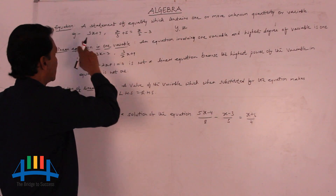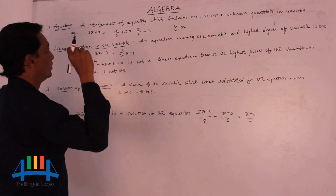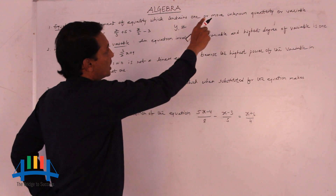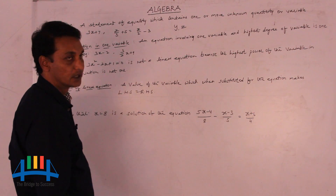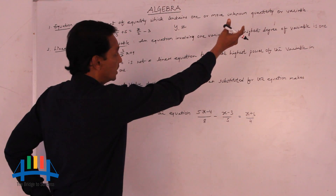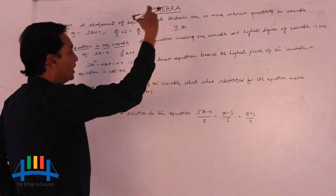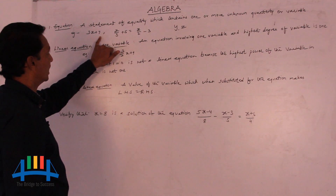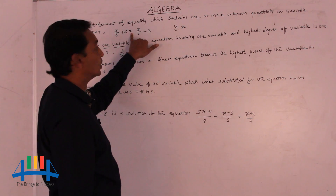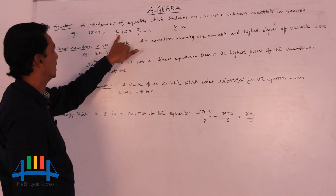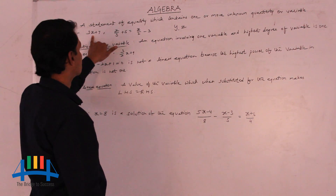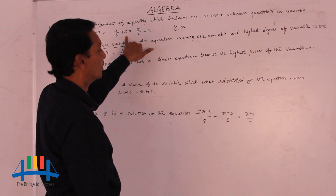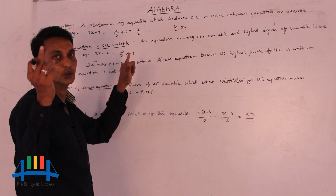Now let's see what is an equation. An equation is a statement of equality. We are calling it equality because here we have an equal symbol. It is a statement of equality which contains one or more unknown quantities or variables. For example, 3x plus 7, and x by 3 plus 5 equals x by 2 minus 3. Here, x is the variable — that is the unknown value.